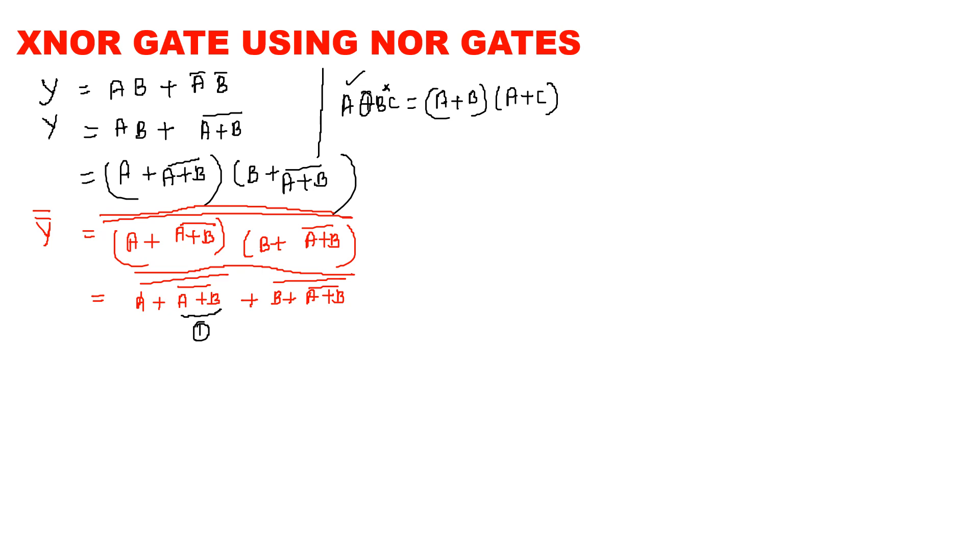To implement A plus B bar, the whole bar, the second NOR gate. Here, the third, the final one, we need fourth NOR gate.